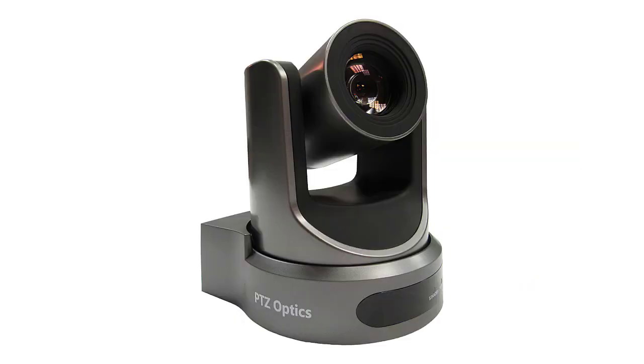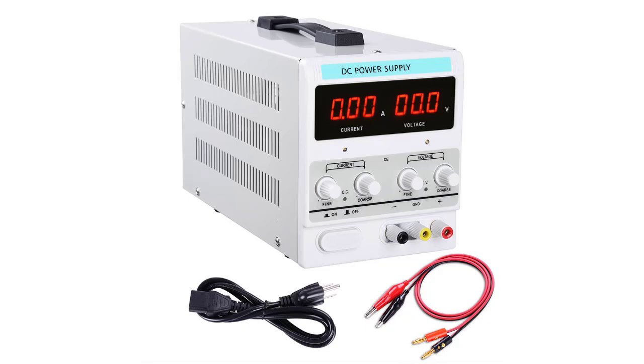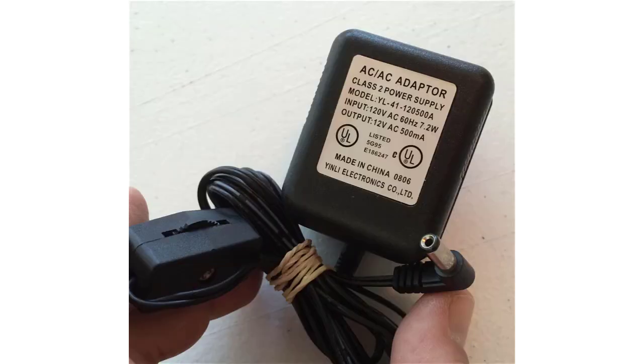First, we've got to understand that the camera needs a certain voltage to operate properly. We might find that information in the specs, but probably not. We can bench test by dropping the voltage until the camera stops performing consistently. But the easier way is to look at the power supply's output voltage and current. In this case, we'll say our supply says 12 volts DC and 500 milliamps current.